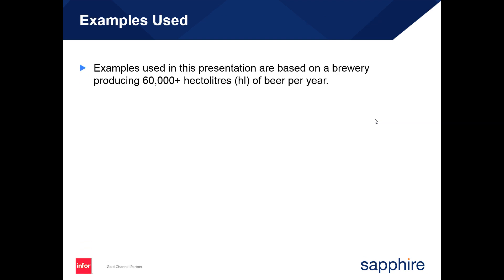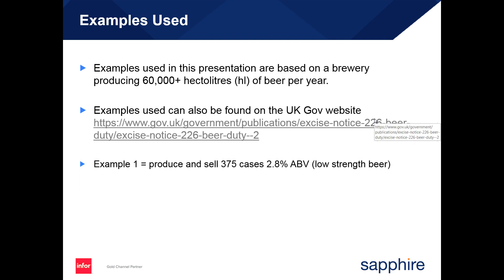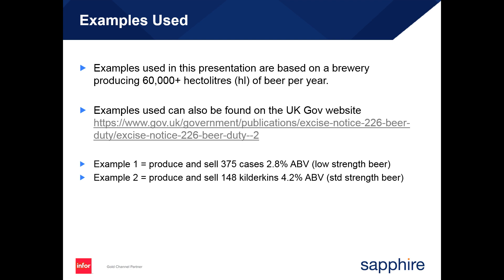The examples in this presentation are based on a brewery producing more than 60,000 hectolitres of beer per year and can also be found on the UK government website. The first example will be producing and selling 375 cases of beer at 2.8% ABV, considered a low strength beer. The second example will be 148 kilderkins at 4.2% ABV, considered standard strength. The third example will be 450 cases at 8% ABV, considered a high strength beer.